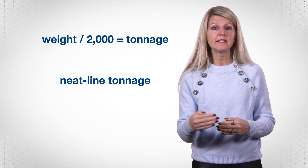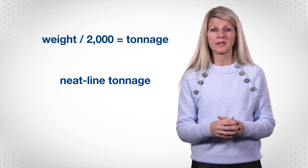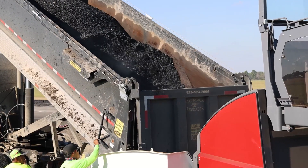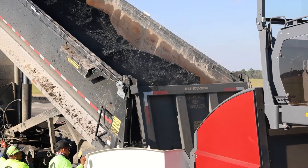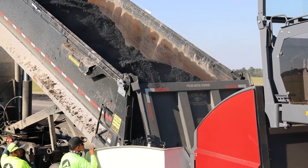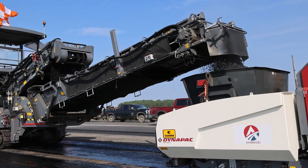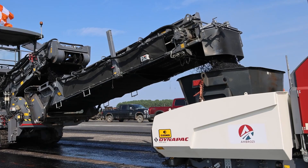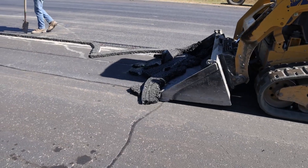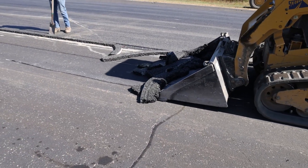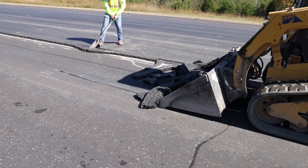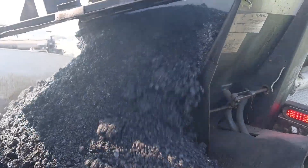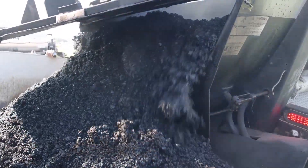This is called the neat line tonnage and does not allow for any waste. Constructing a project typically requires more than the neat line tonnage. Some material is used to heat up the material transfer device and paver, then discarded, and edges are trimmed to construct longitudinal joints. Small fluctuations in the underlying material may also affect how much material is needed.